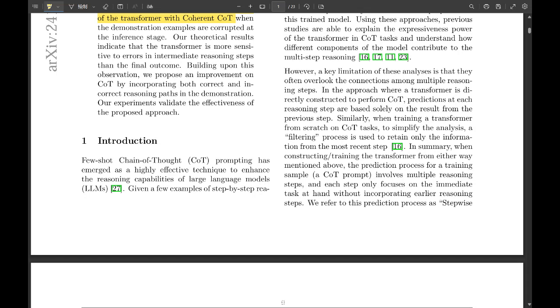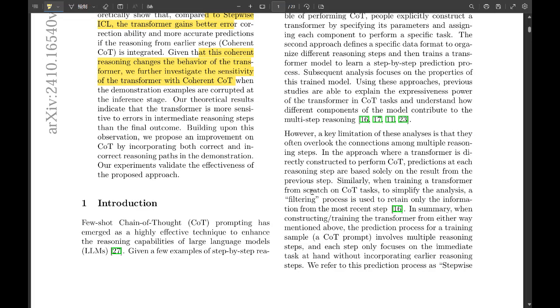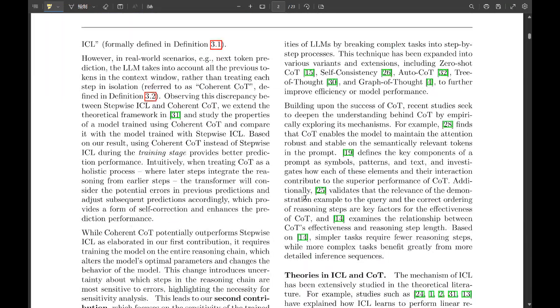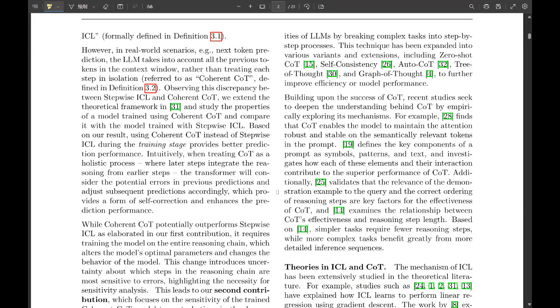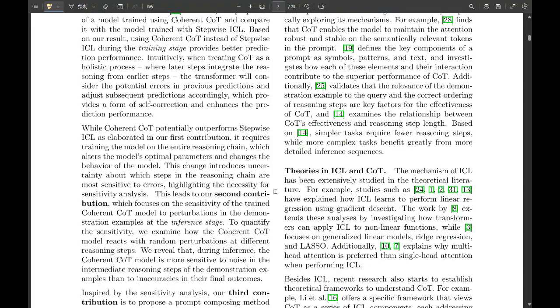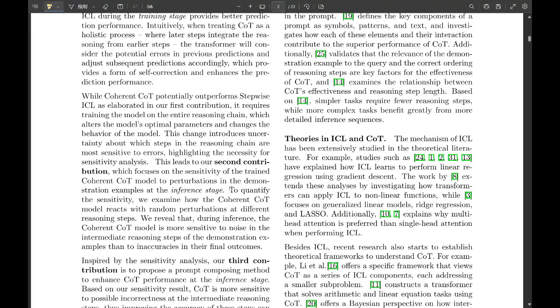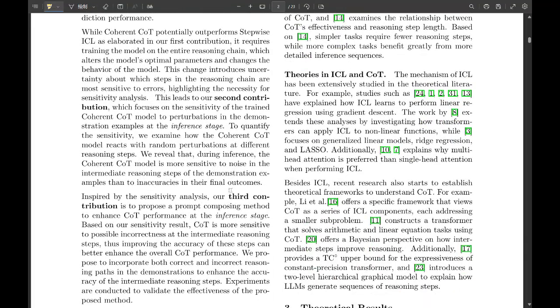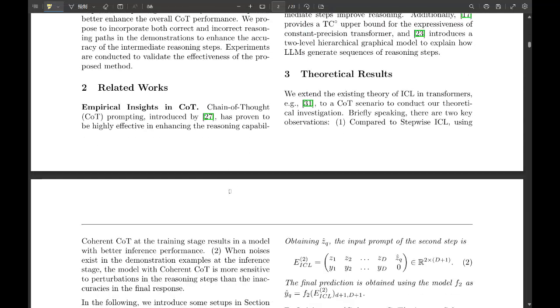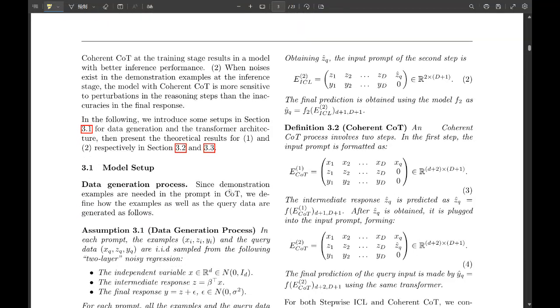So, Coherent CoT is looking back while reasoning. But the paper is saying this actually makes it better at predicting the future. That's the counterintuitive part. How does that work? Well, that's where the theoretical part comes in. Hit me with the theory. They actually have mathematical proof. They did the math. It's Proposition 3.1 to be exact. Probably filing that away. But the gist is...